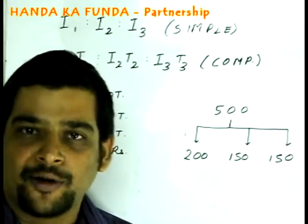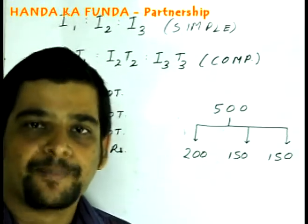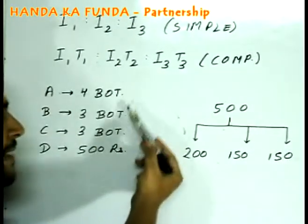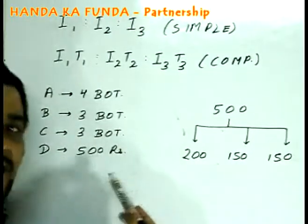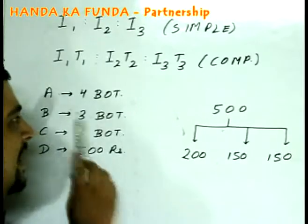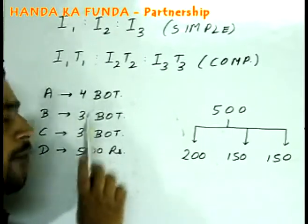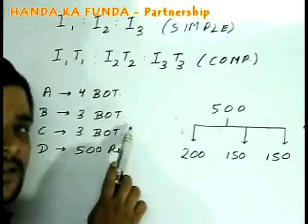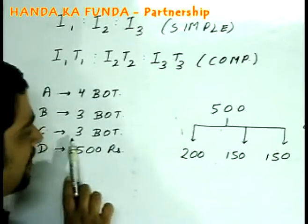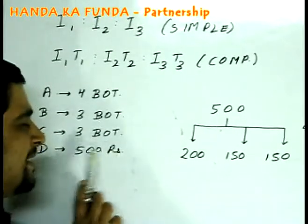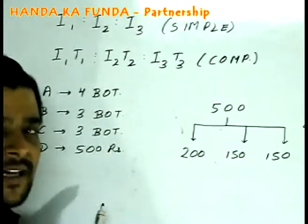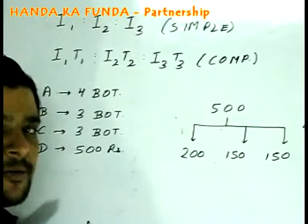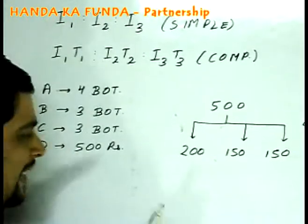Let me clarify this with the help of an example. Say there are 4 friends — A, B, C, and D — and they decide to have a party. A brings 4 bottles of beer, B brings 3 bottles of beer, and C brings 3 bottles of beer.